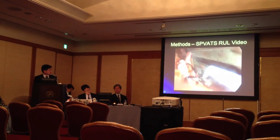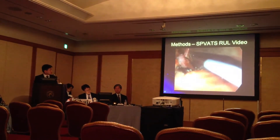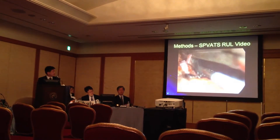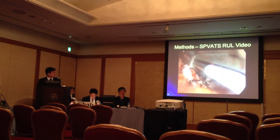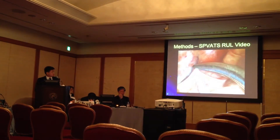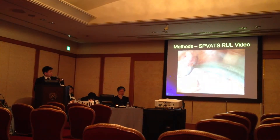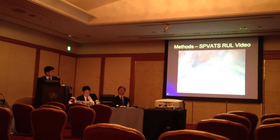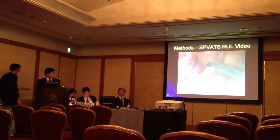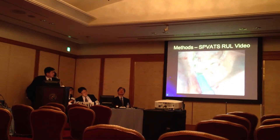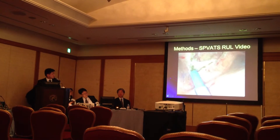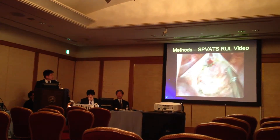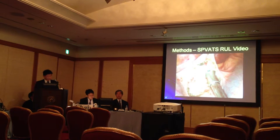We also perform hilar dissection for lymph nodes — you can see a lymph node in the interlobar area. We do a standard subcarinal dissection by pulling the lobe forward and then dissecting the subcarinal area. We also open the paratracheal space completely to look for lymph nodes.